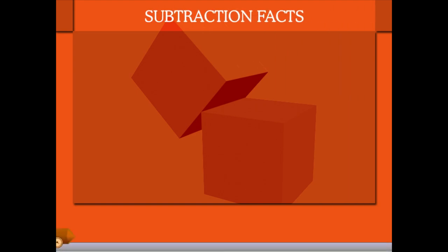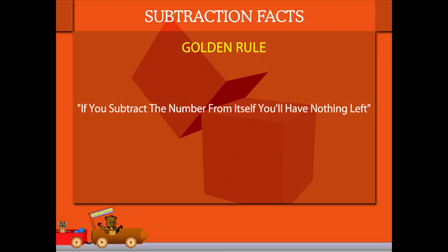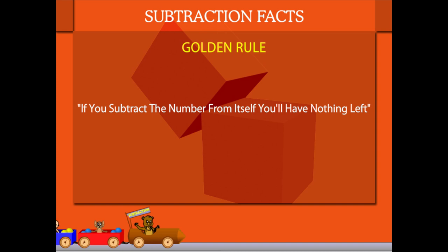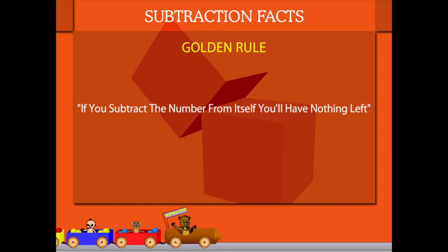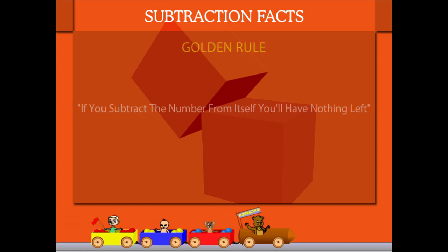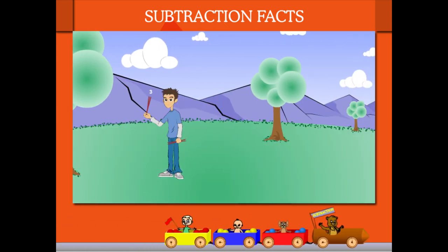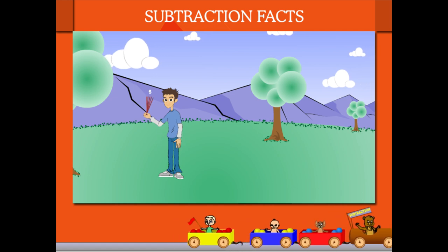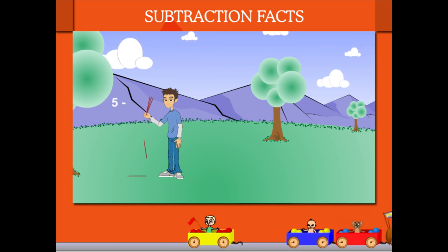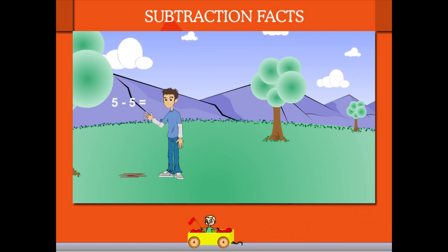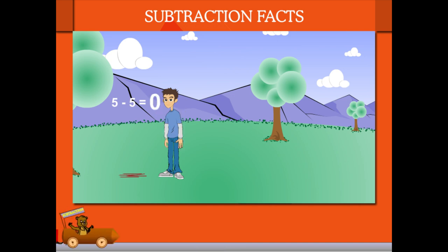Subtraction Facts. The golden rule is, if you subtract the number from itself, you'll have nothing left. Here's Robin. He has 5 sticks in his hand. He throws them away one by one. He has nothing left now. He now has 0 sticks.